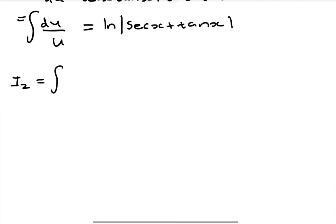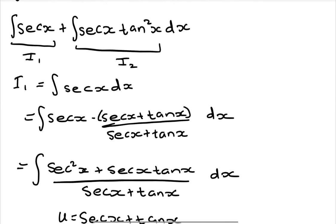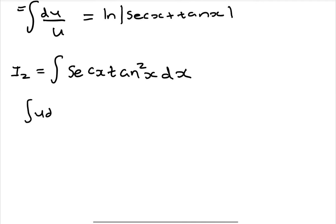Moving on to I2, which involves the integration of sec(x)tan²(x). This integral can only be solved through integration by parts, which uses the formula: the integral of u dv equals uv minus the integral of v du.